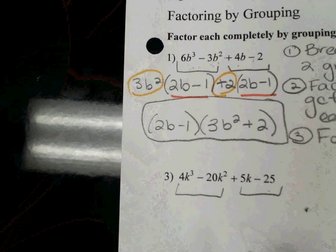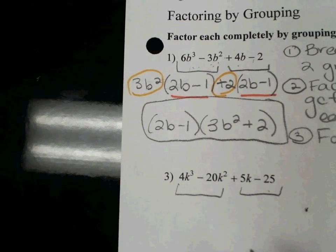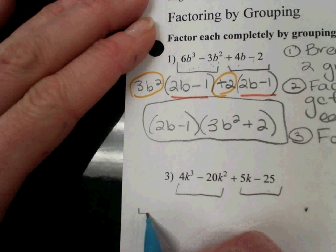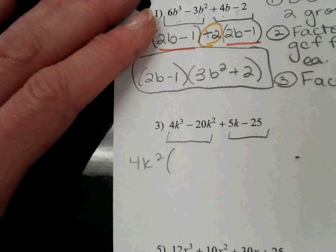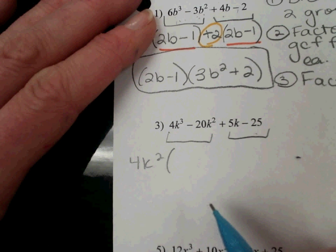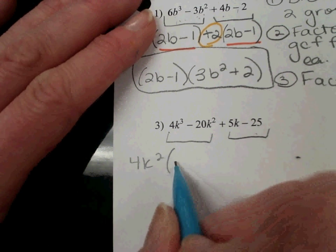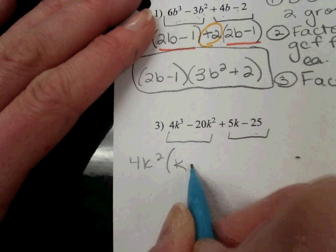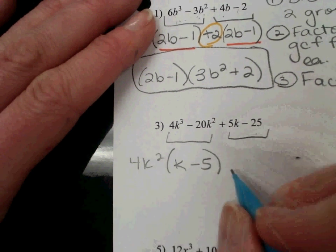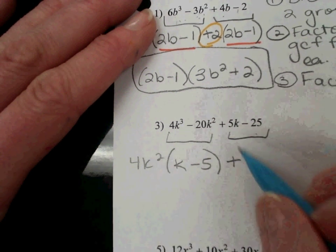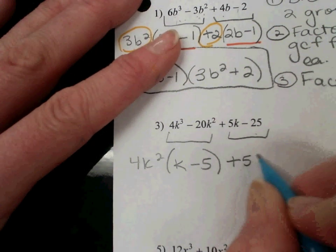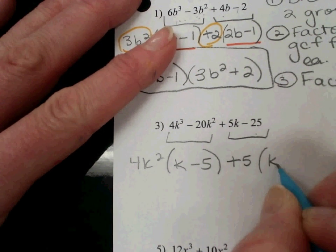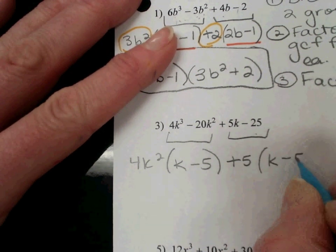4k². 4k². It would just be 1k minus 5, or just k minus 5. Plus, don't forget the plus sign there. And for the second group, 5k minus 25, the GCF is 5, so it would just be 1k minus 5.